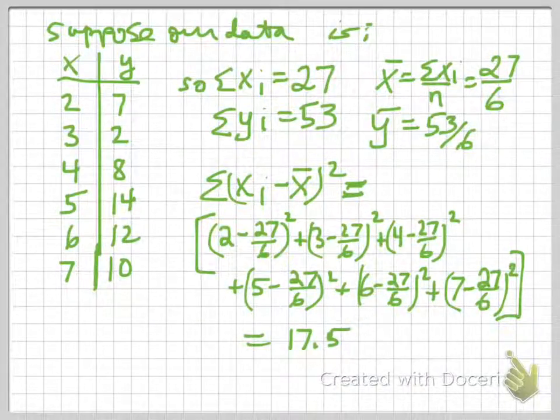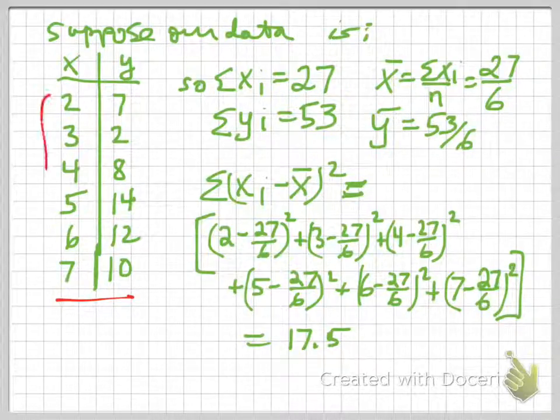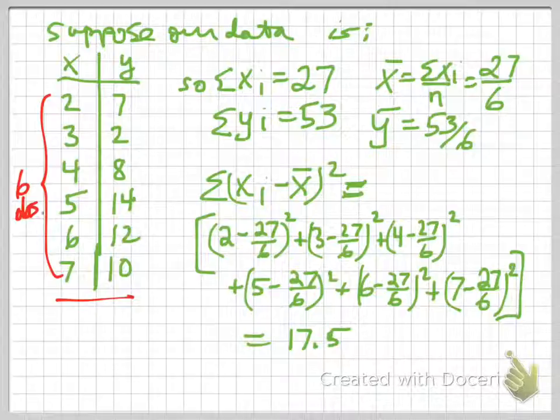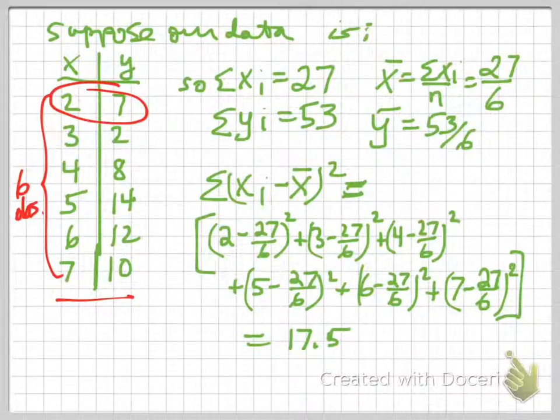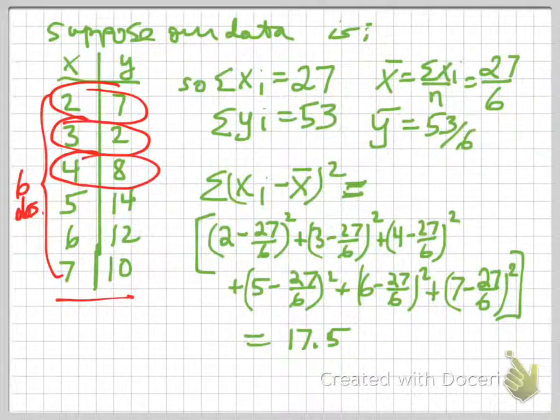So here's our data that we have. So we have observations on x. We have six observations. And each observation is a pair. So x1, y1 is this, x2, y2 is this, x3, y3 is this.